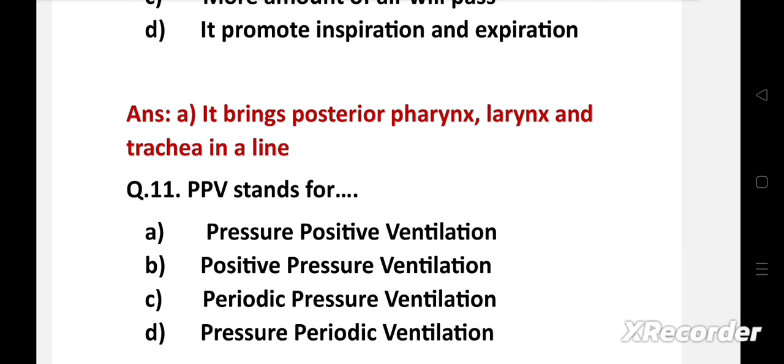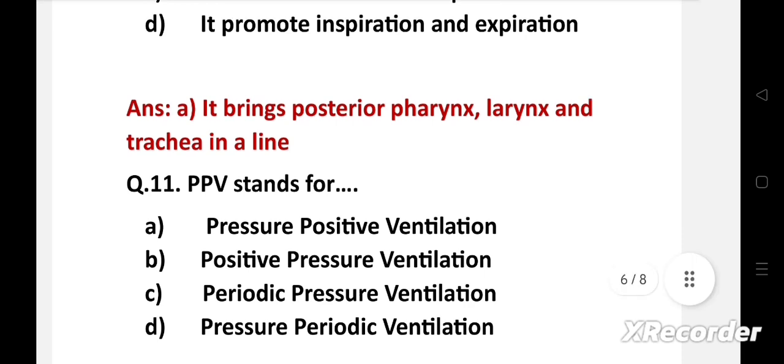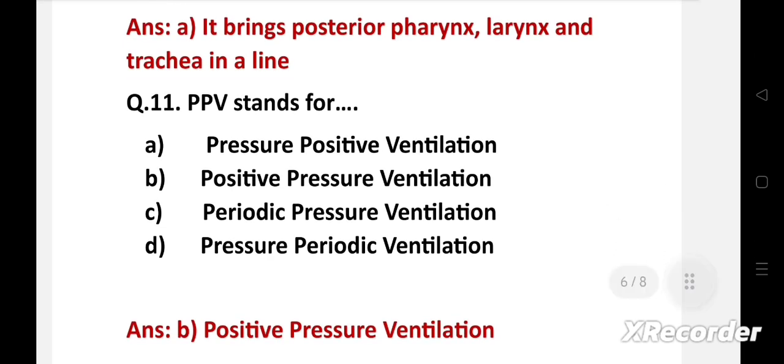PPV stands for — option A: pressure positive ventilation, B: positive pressure ventilation, C: periodic pressure ventilation, D: pressure periodic ventilation. Right answer is option B: positive pressure ventilation. Positive pressure ventilation is the most important aspect of newborn resuscitation for ensuring adequate ventilation to the lungs and oxygenation to vital organs.